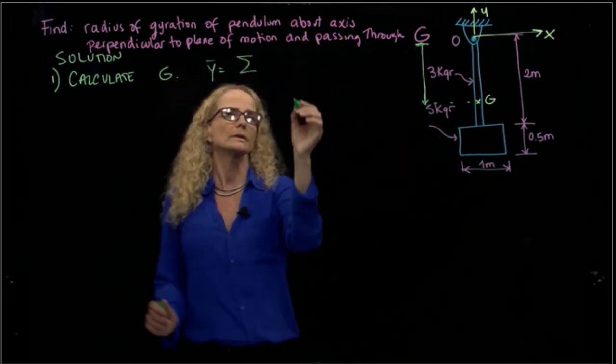We want to calculate it in terms of y-bar. y-bar will be all the additions of all the masses over the total mass. Since we have only two masses, the first mass is this rod, and the center of mass of that rod, if the total length is 2 meters, will be 1 meter. 1 meter times the mass, which is 3,